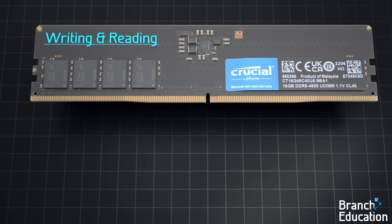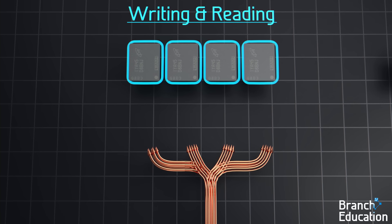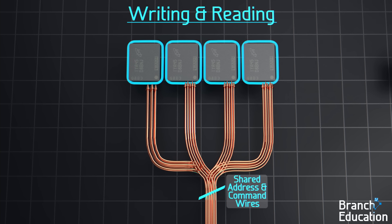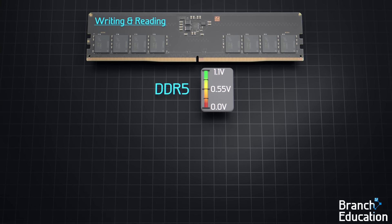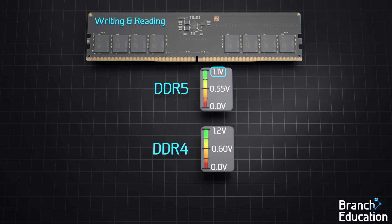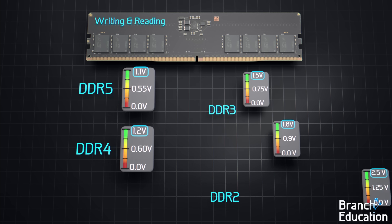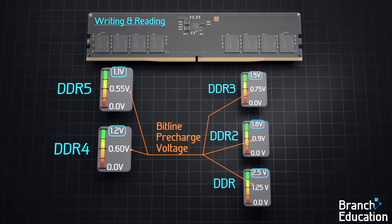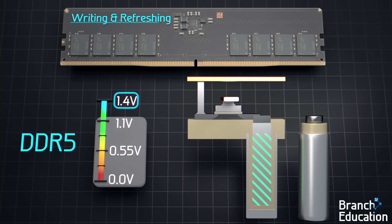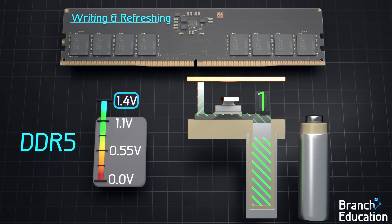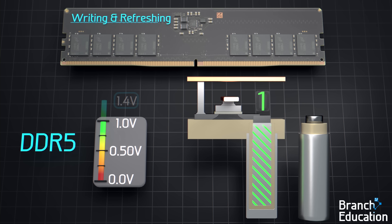Three quick notes. First, writing and reading happens concurrently with all 4 chips in the shared memory channel, using the same 31-bit address and command wires, but with different data wires for each chip. Second, with DDR5 for a binary 1, the voltage is actually 1.1 volts. For DDR4, it's 1.2 volts, and prior generations had even higher voltages, with the bitline pre-charge voltages being half of these voltages. However, for DDR5, when writing or refreshing, a higher voltage of around 1.4 volts is applied and stored in each capacitor for a binary 1, because charge leaks out over time. Third, the number of bank groups, banks, bitlines, and wordlines varies widely between different generations and capacities, but is always in powers of two.